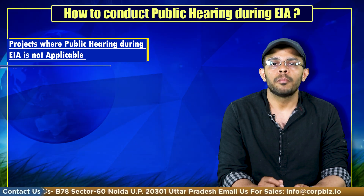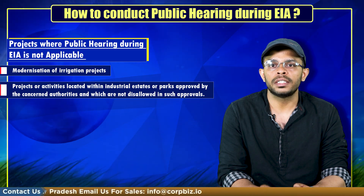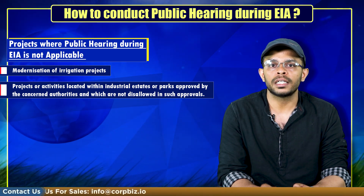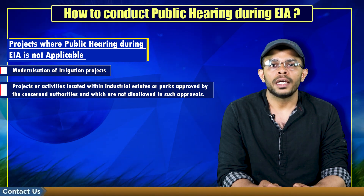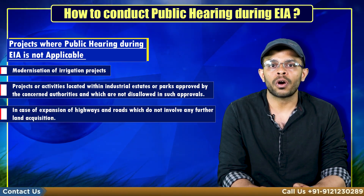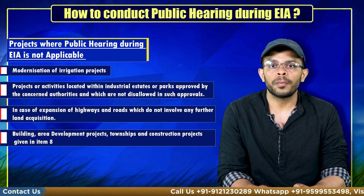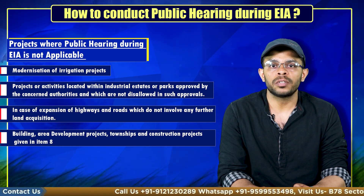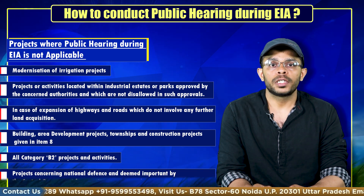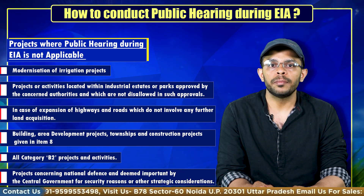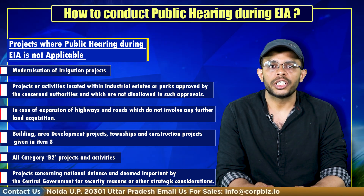Exclusions include modernization of irrigation projects, projects or activities located within industrial estates or parks approved by the concerned authorities, expansion of highways and roads which do not involve any further land acquisition, building area development projects, townships and construction projects given in item 8, all category B2 projects and activities, and projects of national defense deemed important by the central government for security reasons or other strategic considerations.